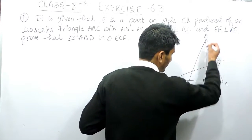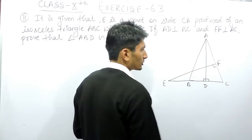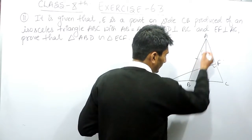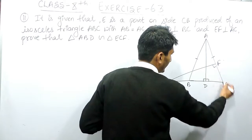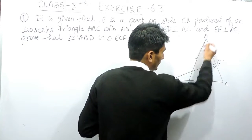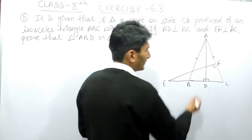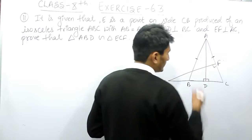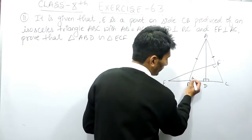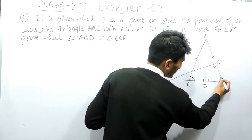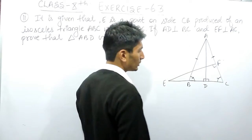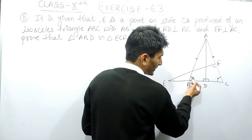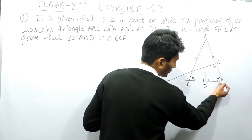And if these two sides are equal, obviously the angles opposite to these sides must also be equal. So the angle opposite to this side is this, and the angle opposite to this side is this, so angle C must also be equal to angle B.